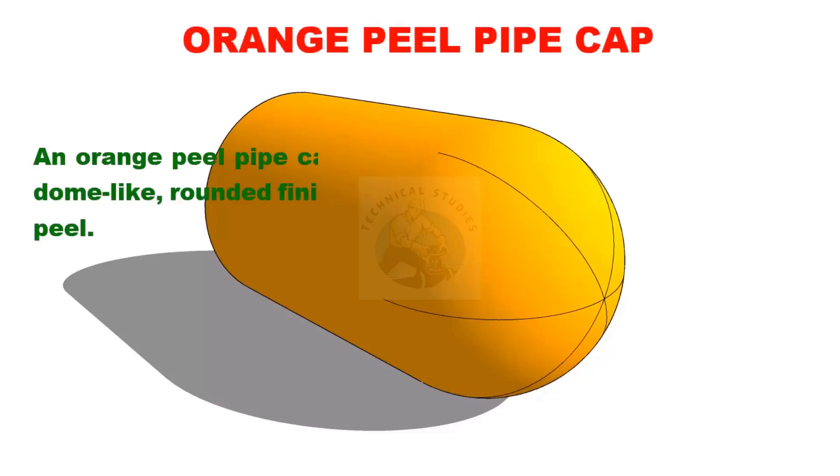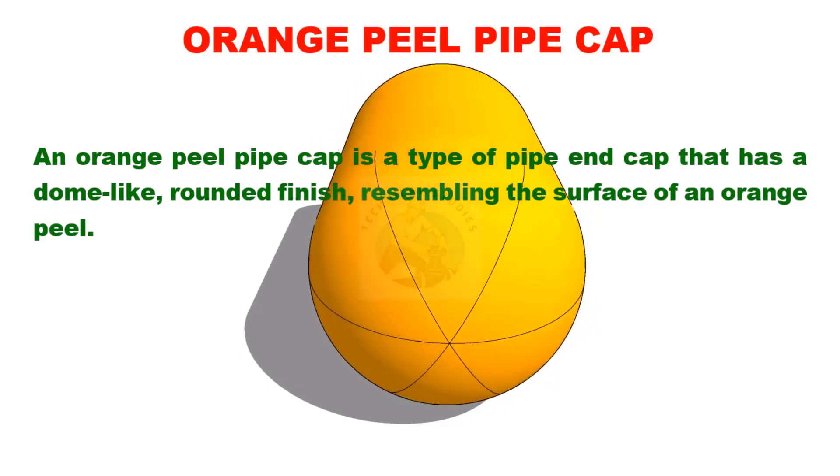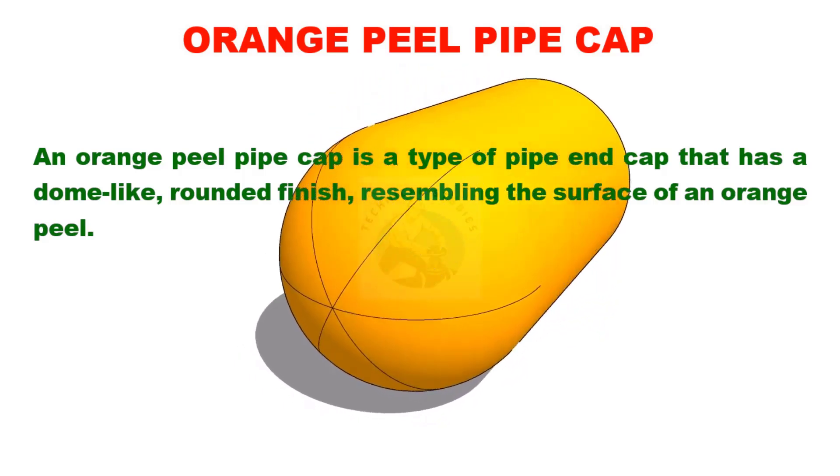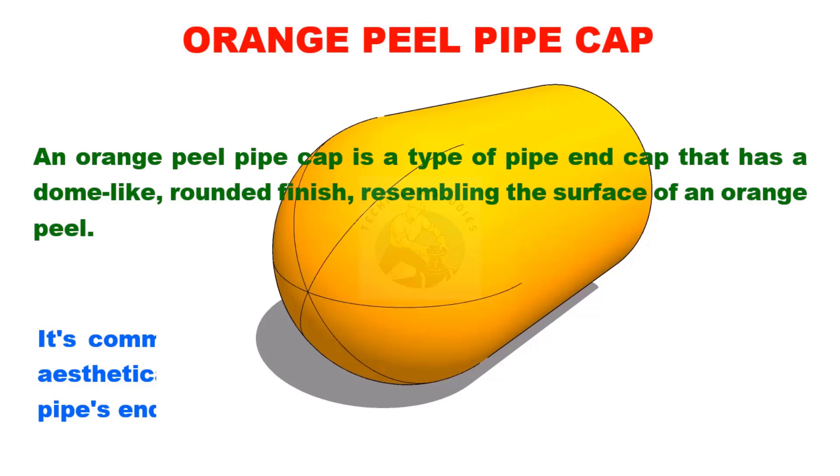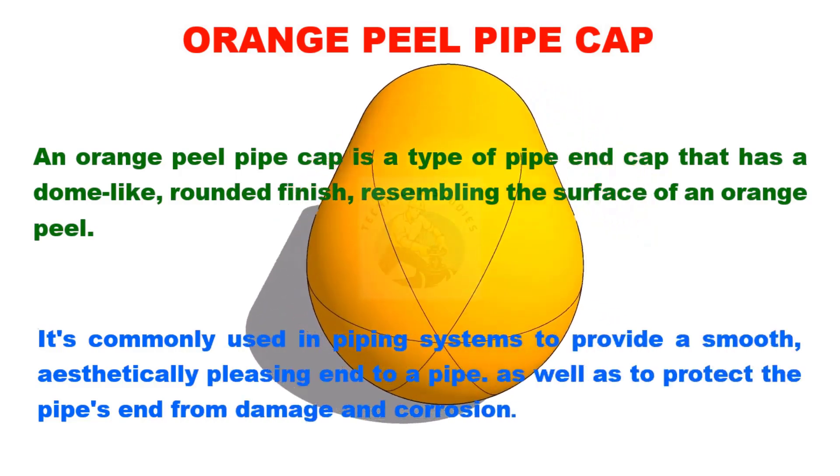An orange peel pipe cap is a type of pipe end cap that has a dome-like rounded finish resembling the surface of an orange peel. It's commonly used in piping systems to provide a smooth, aesthetically pleasing end to a pipe.